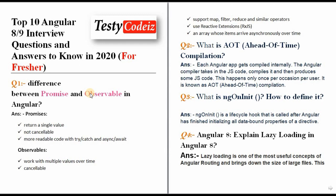So guys, Promises and Observables — what are these things? We are going to tell you three, four, five points. So first, Promises return a single value. And the third point is more reliable code with try-catch. If you have an error to debug, then you can easily understand it.